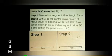Step 1: Draw a line segment AB of length 7 cm. Step 2: With A as the center, draw an arc of radius equal to diagonal AC, 9 cm. With B as center, draw an arc of radius equal to the side BC, 5 cm, cutting the previous arc at C.